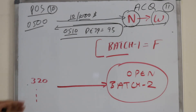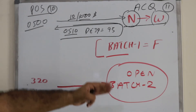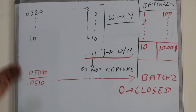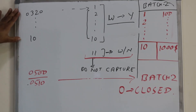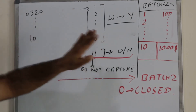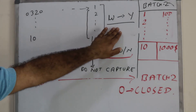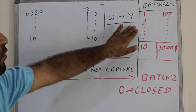Next, the POS machine will start sending 320 messages and the acquiring bank will open a new batch — batch 2. Since there were 10 transactions in POS memory, the POS device sends only 10 320 messages. The acquiring bank starts matching each one with the original, and for the first 10 transactions it finds a match.